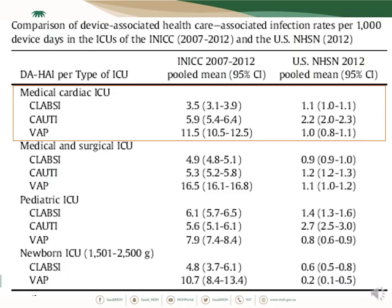Comparing CLABSI, CAUTI, and VAP rates across the most common types of ICU — including medical, cardiac, medical-surgical, pediatric, and neonatal ICU — the INIC data is consistently two or three times higher than the NHSN data.